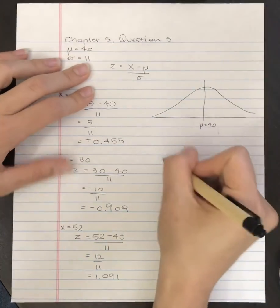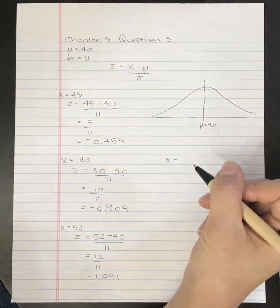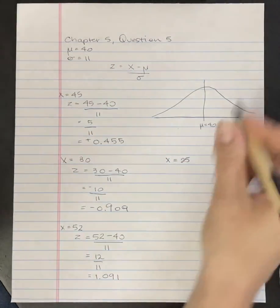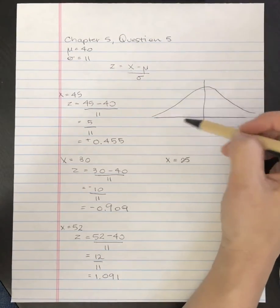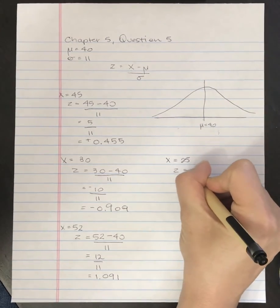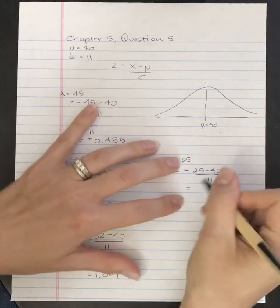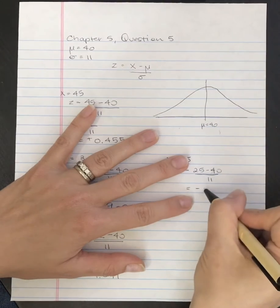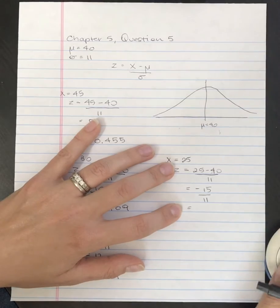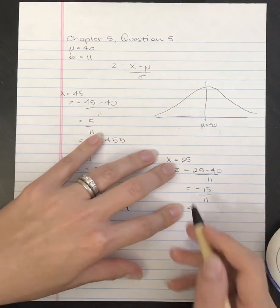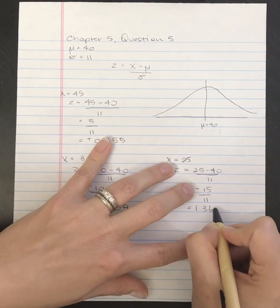The next x score to compute is x equals 25. Since 25 is less than 40, it's going to be somewhere over here — we're expecting a negative z-score value. So z equals 25 minus 40, divided by 11, giving us negative 15 divided by 11, which is negative 1.36 repeating, so negative 1.364.